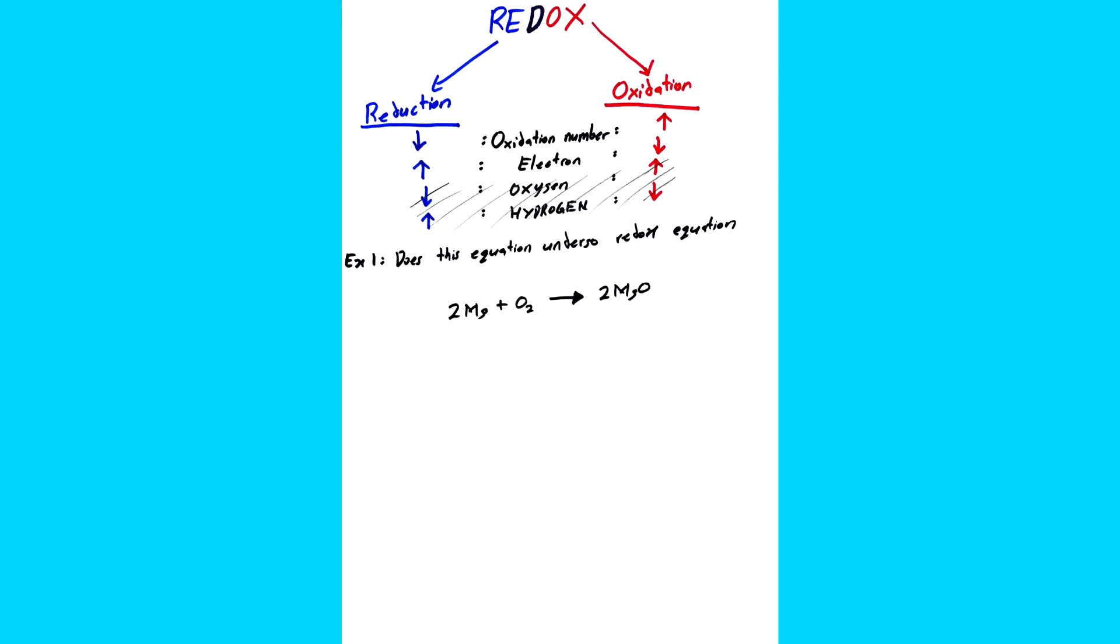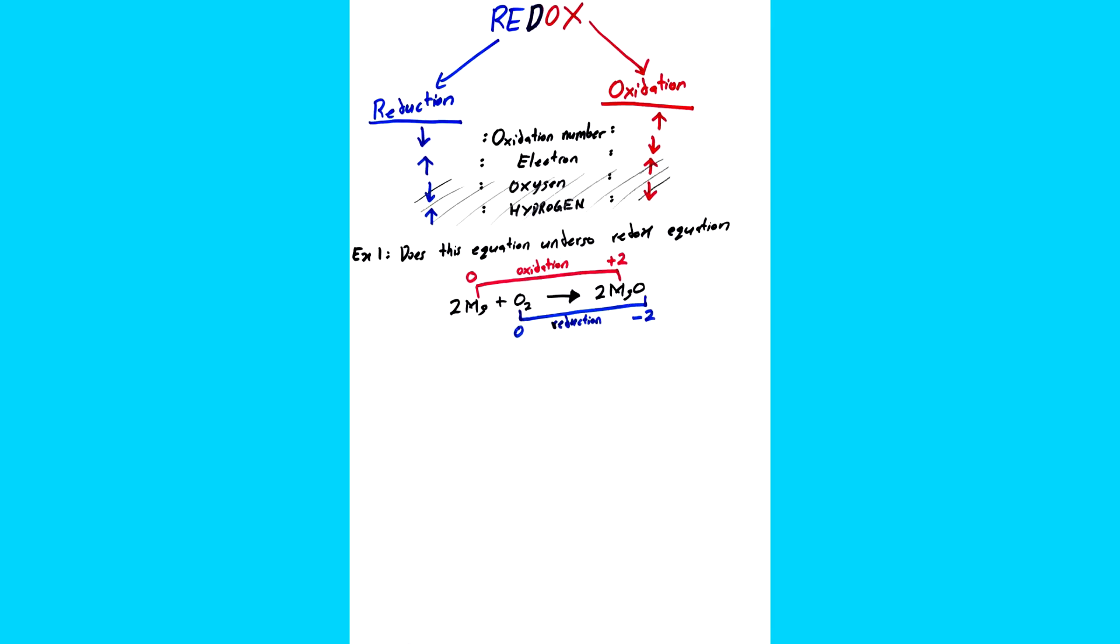Now I have a question for you. Does this equation undergo redox reaction? Take some time to think and pause the video if you want. So basically what you have to do is draw a line between Mg and Mg and O and O, and then check the oxidation number at each ends. So the oxidation number of Mg went from 0 to plus 2, thus it is oxidation. And the oxidation number of oxygen went from 0 to negative 2, therefore it undergoes reduction.